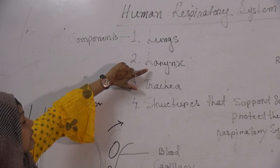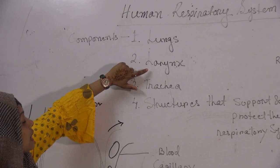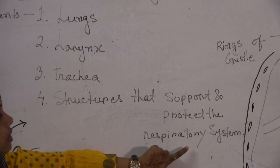Now let's focus on the components of the human respiratory system. The human respiratory system basically consists of the lungs — there are two lungs — the larynx, trachea, and any other structures that support or protect the respiratory system. Let's take a look at the diagram.